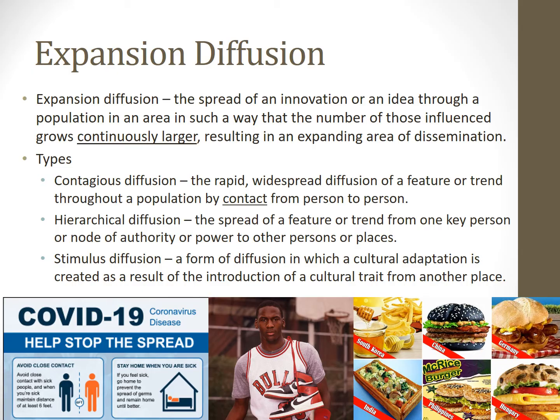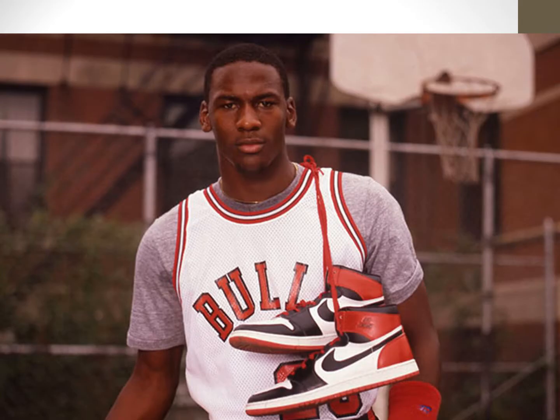Hierarchical diffusion is the spread of a feature or trend from one key person or node of authority or power to other persons or places. When Michael Jordan signed an endorsement deal with Nike, the idea was that if Michael Jordan wore these shoes, then other people would want to be like Mike and Nike would sell lots of shoes. So professional athletes, celebrities, and social media influencers are at the top of a hierarchy — at the top of a pyramid — and influence the people further down the pyramid.